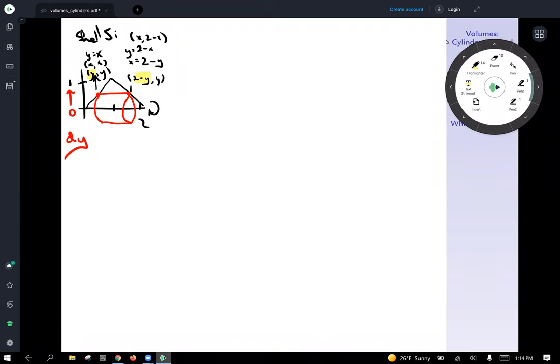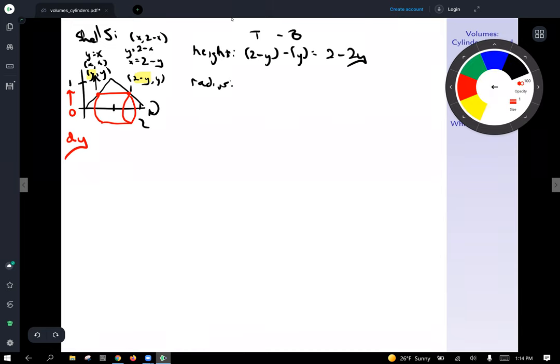Summarizing that, we, what we have is we've figured out the height of our shell. And so top minus bottom in the x direction, the top is 2 minus y, minus the bottom is y. 2 minus y minus y, tidies up to 2 minus 2y. We still have to figure out the radius. So what's our radius going to look like in this case? Well, since we're slicing the y direction, our radius is going to start at 0. And our radius is going to be determined by how far you are along in the y direction from 0 to 1. So it's just going to be y. So radius equals y.